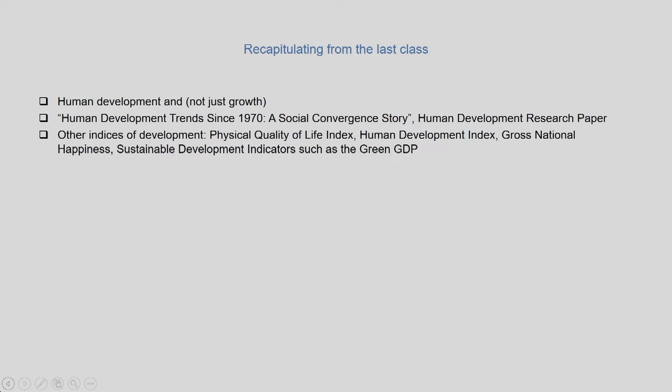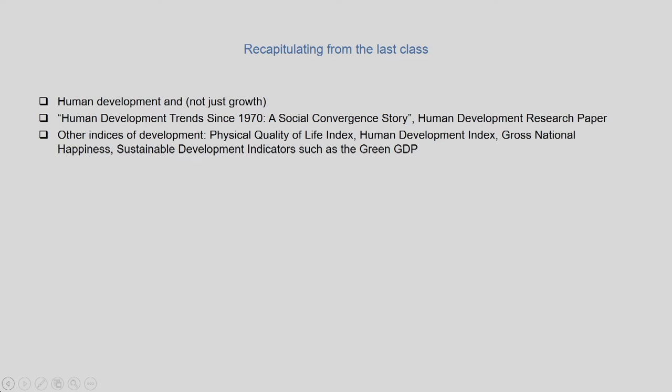We also discussed a human development research paper titled 'Human Development Trends Since 1970: A Social Convergence Story.' Through empirical research based on 111 countries, the paper found that 110 of the 111 countries had shown substantial progress in different components of human development starting from the 1970s, particularly in the pre-1990 period over a 35-year span.